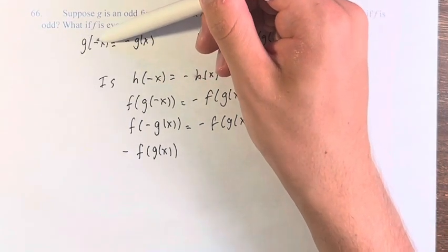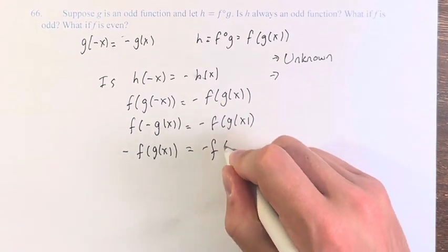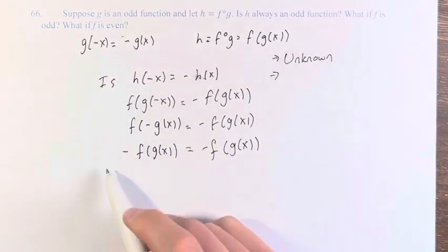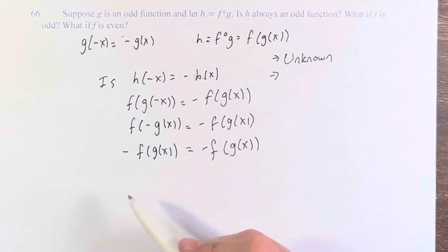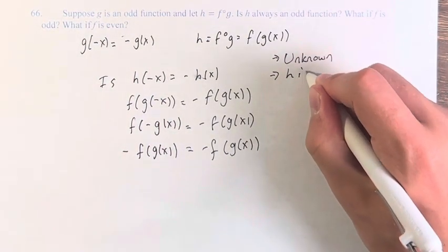The g of a negative something is equal to negative times the g of that something. We do the same here. And of course, negative f of g of x is equal to itself. Therefore, if f is odd, h is odd.